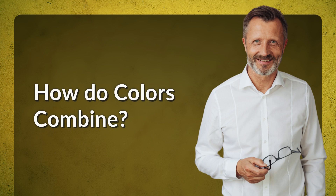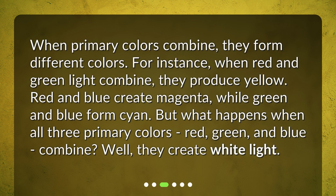How do colors combine? When primary colors combine, they form different colors. For instance, when red and green light combine, they produce yellow. Red and blue create magenta, while green and blue form cyan. But what happens when all three primary colors — red, green, and blue — combine? Well, they create white light.